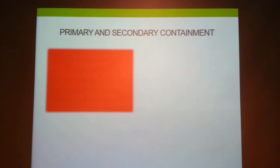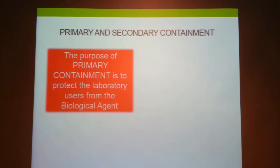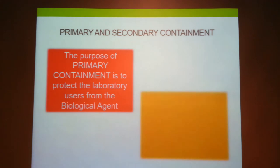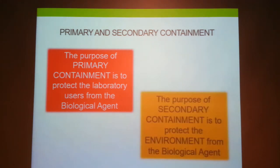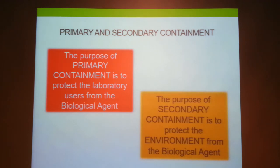To summarize the key definitions: primary containment protects laboratory users, and secondary containment protects the environment from the biological agent — in this case, the plant which is genetically modified or which has been imported and may contain pathogens.